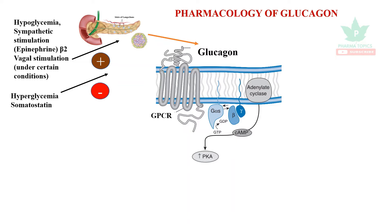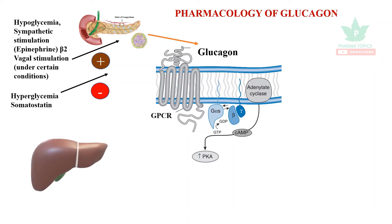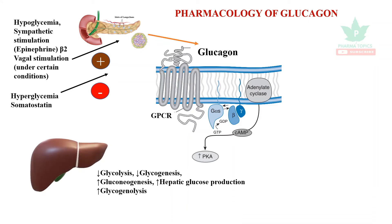Through the G protein-coupled receptor, glucagon increases the activity of adenyl cyclase, raises cyclic AMP as the second messenger, and increases the activity of phosphokinase A, which phosphorylates several downstream enzymes.